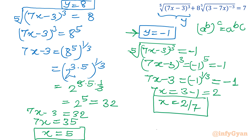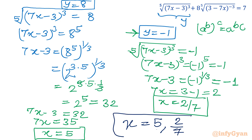So we have calculated x equals 5 and x equals 2 over 7 as our solutions. Let's verify both values to confirm they satisfy the original equation.